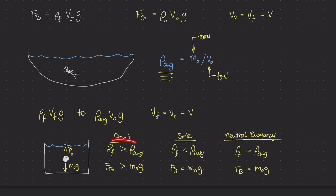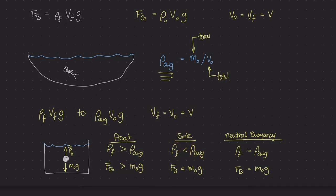To summarize: neutral buoyancy is when the mass density of the fluid equals the mass density of the object. If the mass density of the fluid is greater than the object, the object floats. If the mass density of the fluid is less than the object, the object sinks.